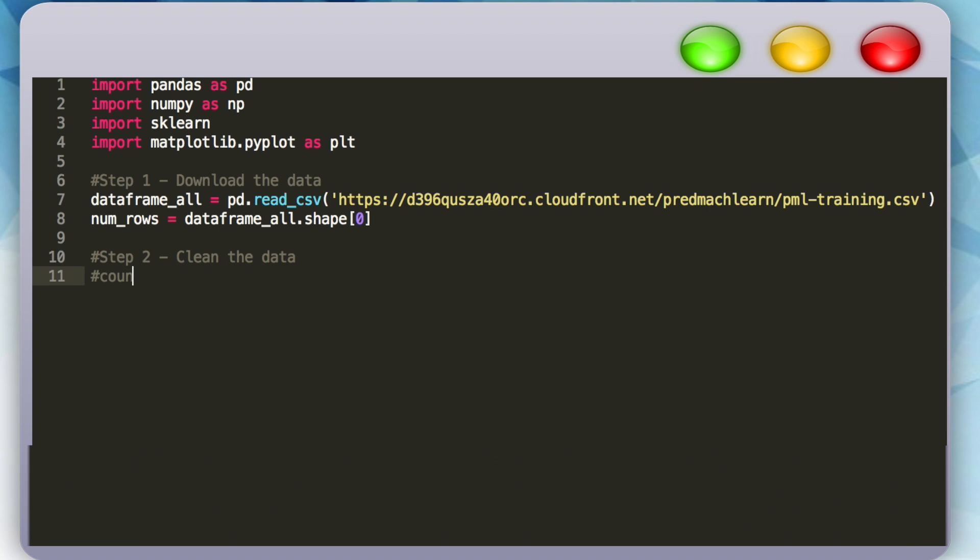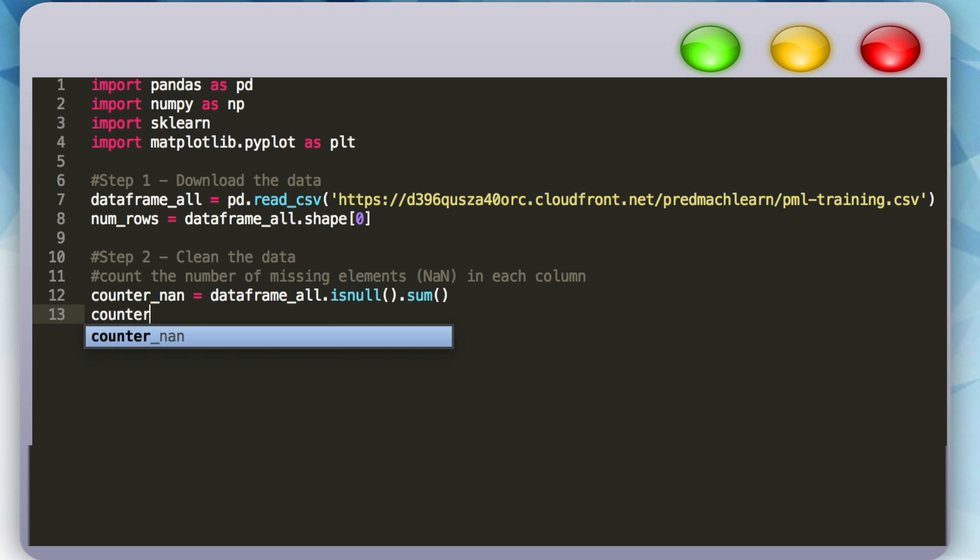We'll call the isNull function, then the sum function to get the total sum of the null or empty columns in our data set. Then we'll create another variable to count the number of non-empty columns in our data set using the previous variable as a parameter. Now we can remove the columns with missing elements by only using the non-empty columns.